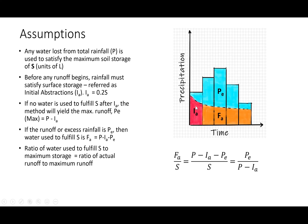The maximum amount of direct runoff you can get is total rainfall minus initial abstraction. The second part of storage that rainfall will satisfy is the soil storage, which is the FA part. The amount of water that can be lost to soil has a maximum value designated by the variable S.